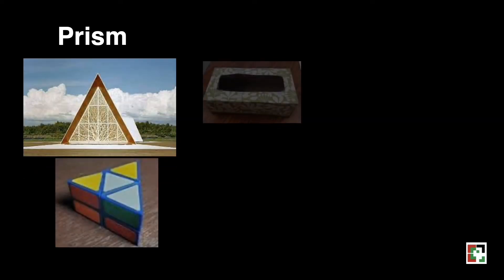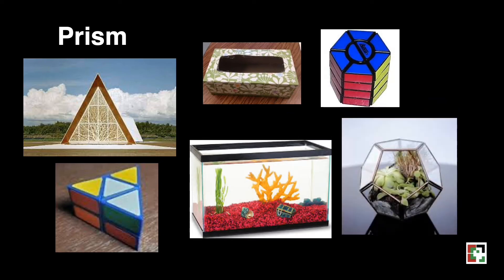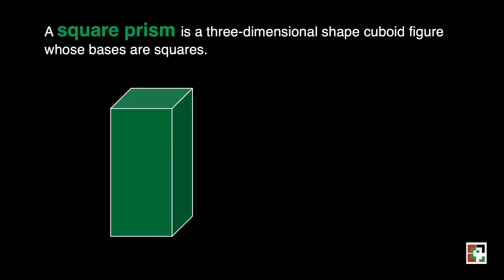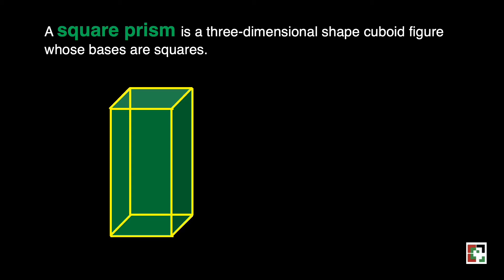Have you seen a prism around you before? Let's see some examples of prism. This is an example of a square prism. It is a three-dimensional shape, a cuboid figure whose bases are squares. Let's count the number of edges: 1, 2, 3, 4, 5, 6, 7, 8, 9, 10, 11, and 12. There are a total of 12 edges.